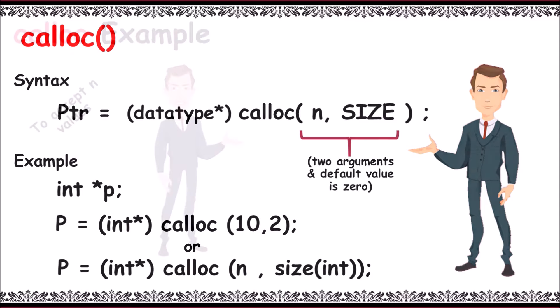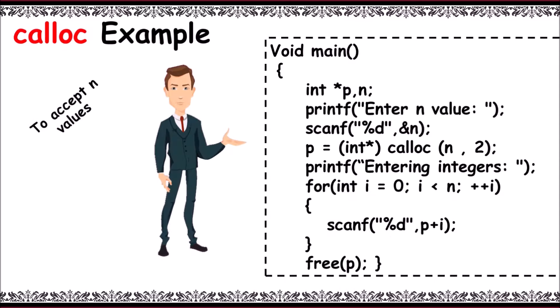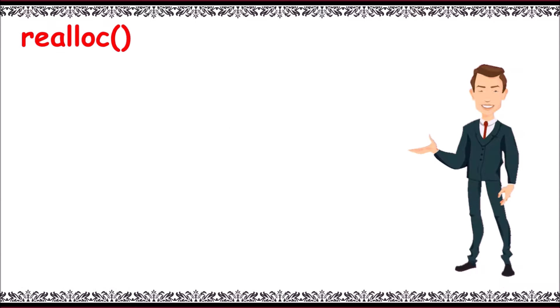Calloc example to accept n values. It is similar to the previous program. The only difference is we use calloc keyword and two arguments n comma 2, and everything is similar. Realloc: the term realloc is used to allocate memory again which is allocated by either malloc or calloc before.